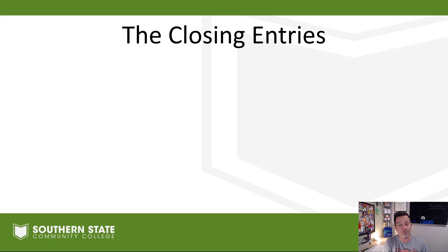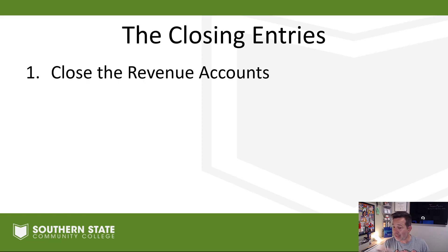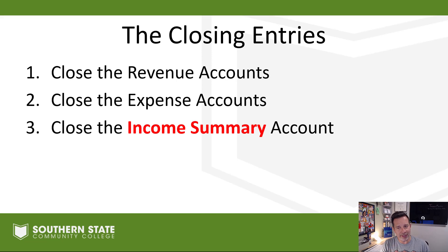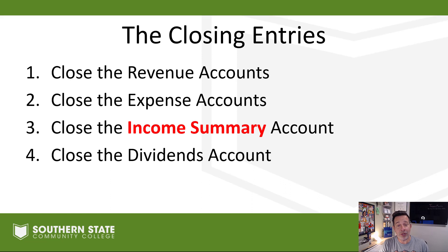There are four closing entries that we need to make at the end of every accounting period. We've got to close out the revenue account or accounts if we have more than one. We've got to close out the expense accounts. Then we close out an account called income summary. And finally, if we have dividends, we close out that dividend account.